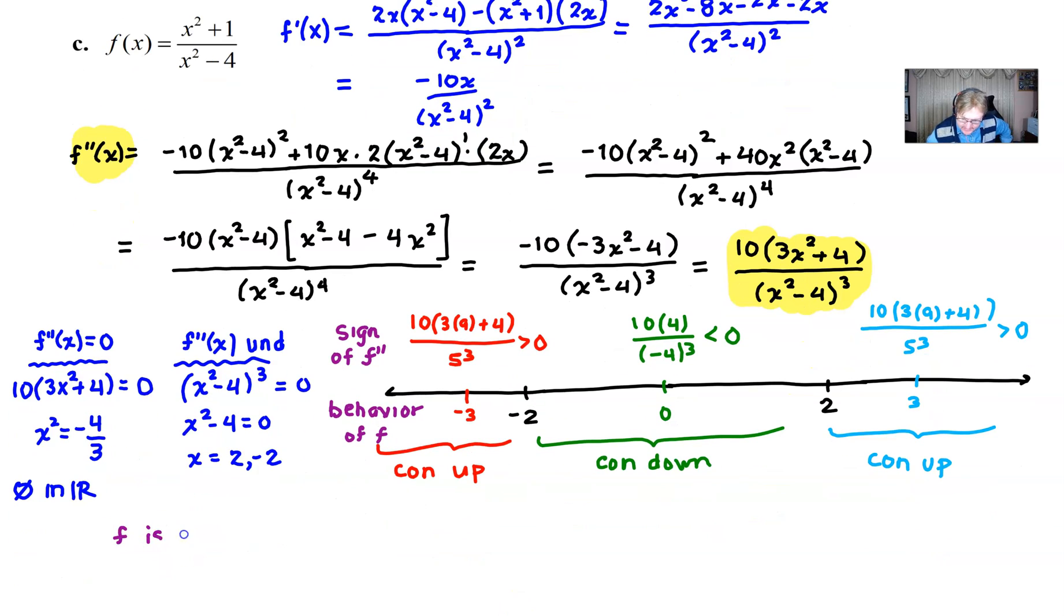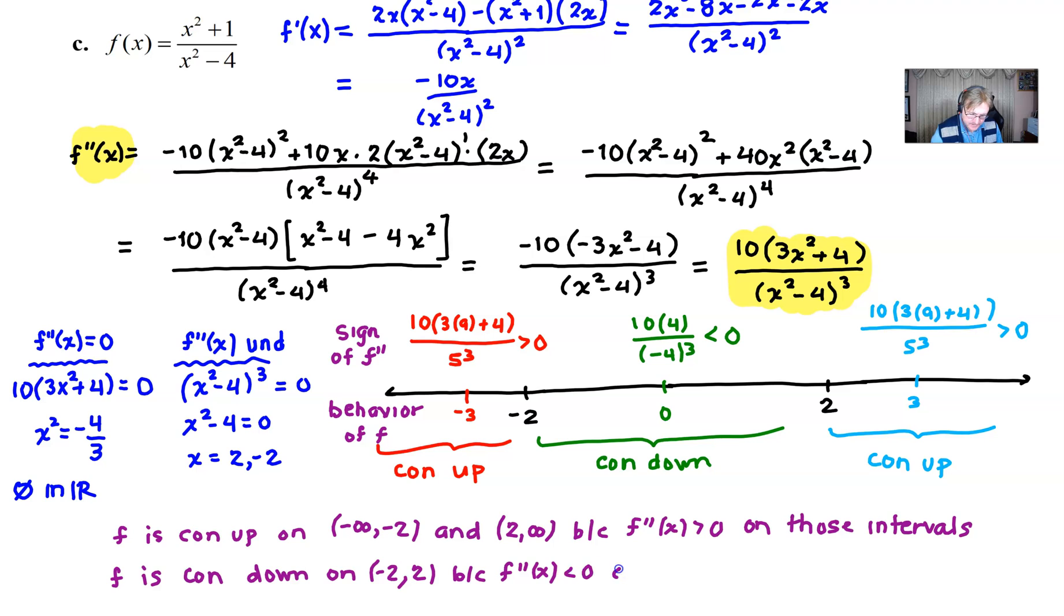So the only thing left to do is kind of organize our thoughts and state our answer. We could say that f is concave up and that's going to happen on a pair of different intervals those intervals would be negative infinity to negative 2 and once again from 2 to infinity. The reason as all other times is because f double prime is going to take on positive values on those intervals. All right next let's discuss why f is concave down. Well first of all where it is concave down is pretty apparent we have negative 2 to positive 2. So concave down on negative 2 to positive 2 because f double prime is less than zero on that interval.